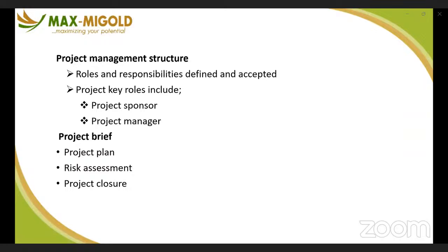Project management structure: rules and responsibilities must be defined and accepted. As a project manager, you must define the rules and responsibility for everybody. Once they are accepted, it ensures that the project begins to move forward. The project key roles include the project sponsor and the project manager. The project manager refers to the project manager and his team, while the project sponsor looks at the client and all associated people working within the grant to ensure that the project is delivered.